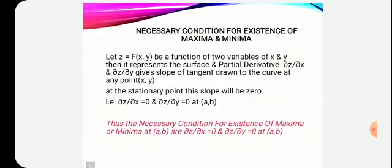Now let us discuss the necessary condition for existence of Maxima and Minima. Let z equal to f(x, y) be a function of two variables x and y. Then it represents a surface and the partial derivatives del z by del x and del z by del y give the slope of the tangent drawn to the curve at the point (x, y). At the stationary point, this slope will be 0. Slope means derivatives, rate of change.